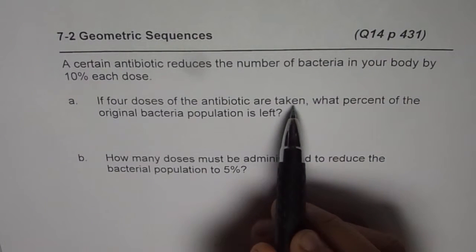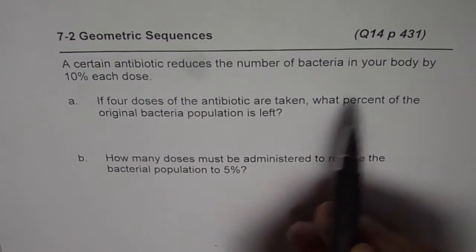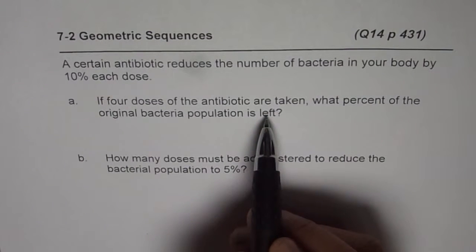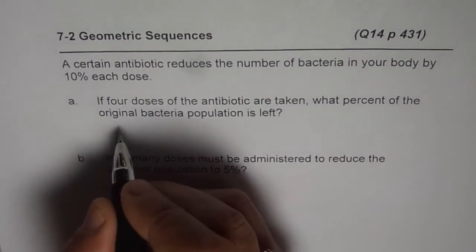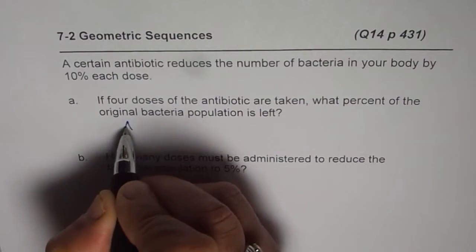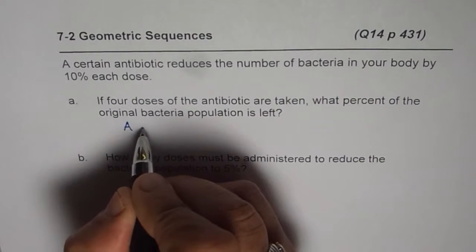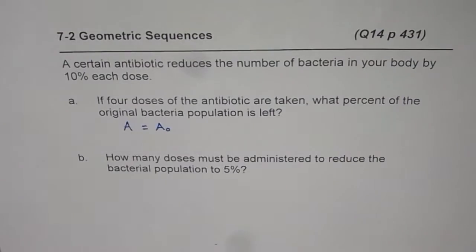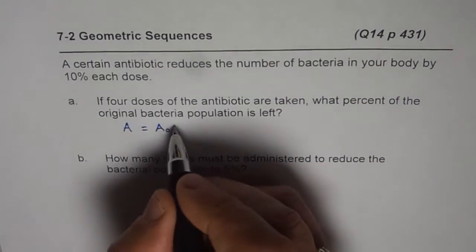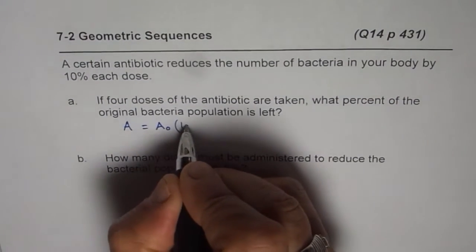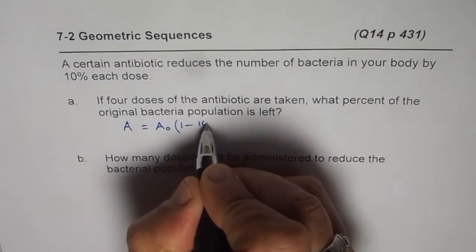When we say what percent of the original bacteria population is left, we are talking about what percent is left. You could write this equation as: the amount A left at any instance of time is equal to original amount, and it is an exponential function since it is every time reduced by 10%.